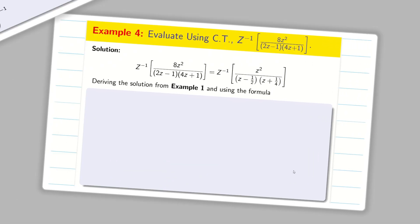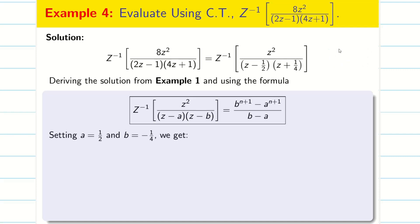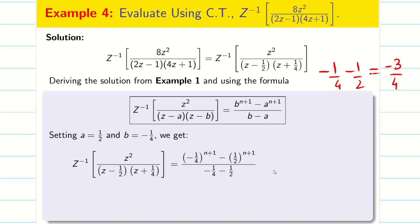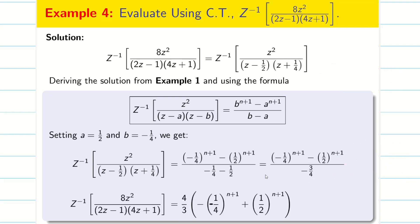Next, in a similar way, consider the problem with denominator (4z+1). Only a small change is going to happen. Deriving as usual: a equals 1/2, and since we have (z + 1/4), b is going to be −1/4. Substituting the values we get (−1/4)^(n+1) minus (1/2)^(n+1) all divided by (−1/4 − 1/2). Taking the LCM gives −3/4 in the denominator, so the numerator becomes −4/3 · [(−1/4)^(n+1) − (1/2)^(n+1)]. Multiplying the negative inside gives (4/3)[−(−1/4)^(n+1) + (1/2)^(n+1)].